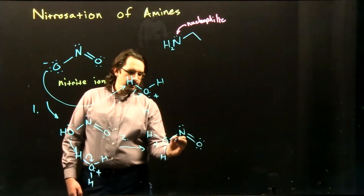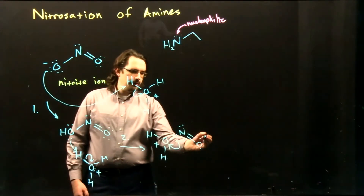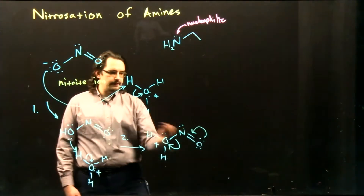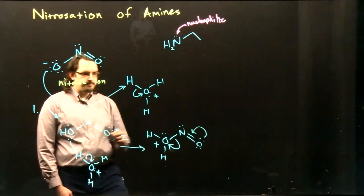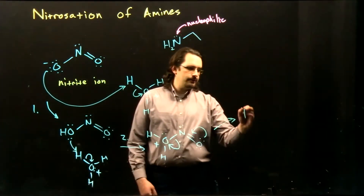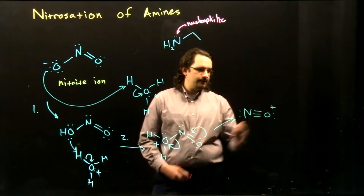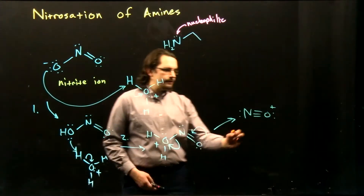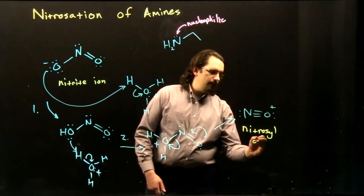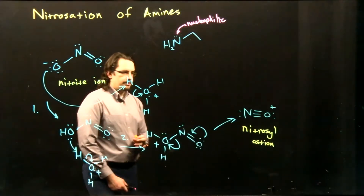We break off the water and move our electrons in to replace the electrons we're losing from our nitrogen, and we create what we call a nitrosyl cation. We have a positive formal charge on our oxygen, forming our nitrosyl cation.